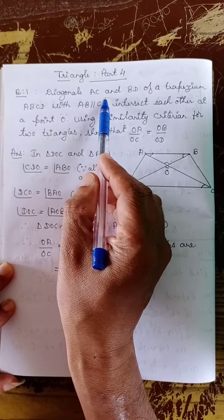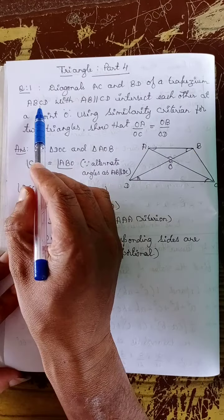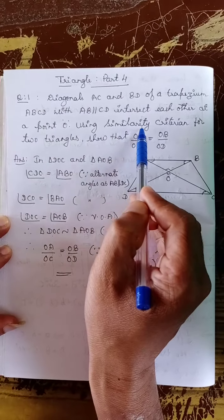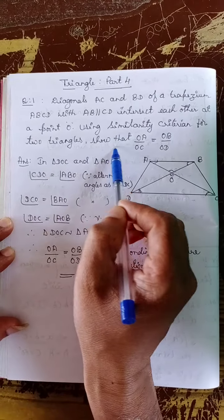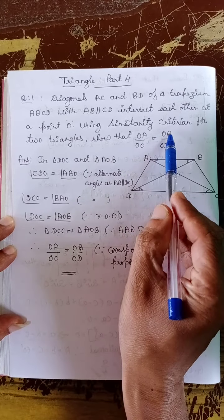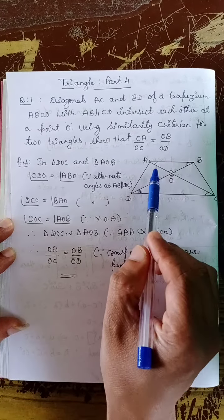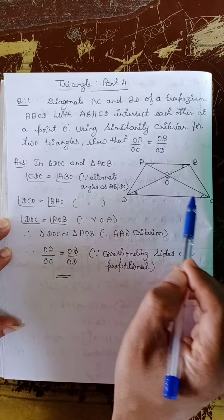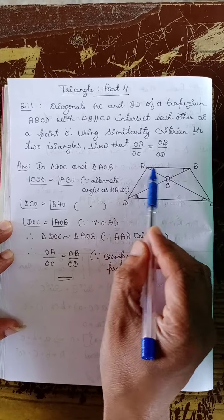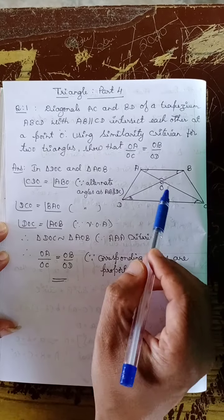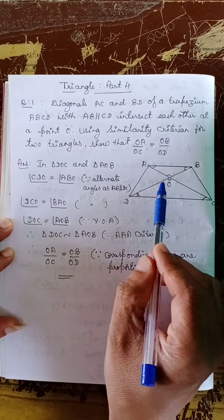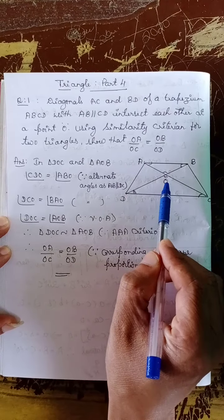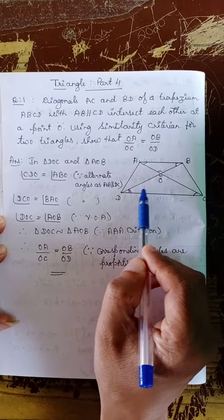Question number 1: Diagonals AC and BD of a trapezium ABCD with AB parallel to CD intersect each other at a point O. Using the similarity criterion for the two triangles, show that OA by OC is equal to OB by OD.